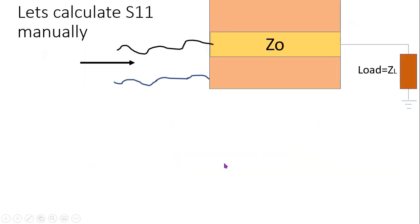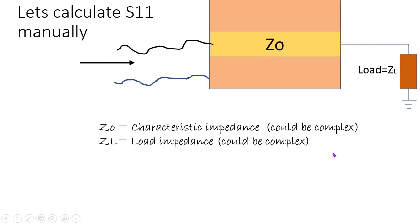So let's calculate S11 manually. What is Z naught? Z naught is your characteristic impedance. ZL is your load impedance. And just see this - this could be complex, this could be complex. For our purpose we were using Z naught as 50, perfect, real, and ZL is 50 for matching purpose like matched load.